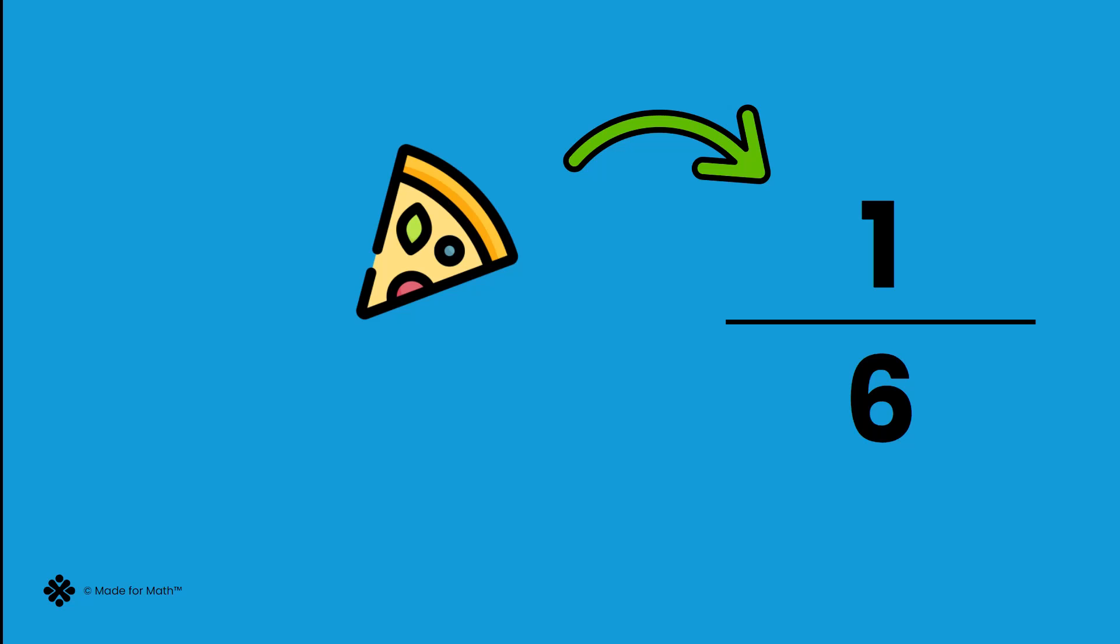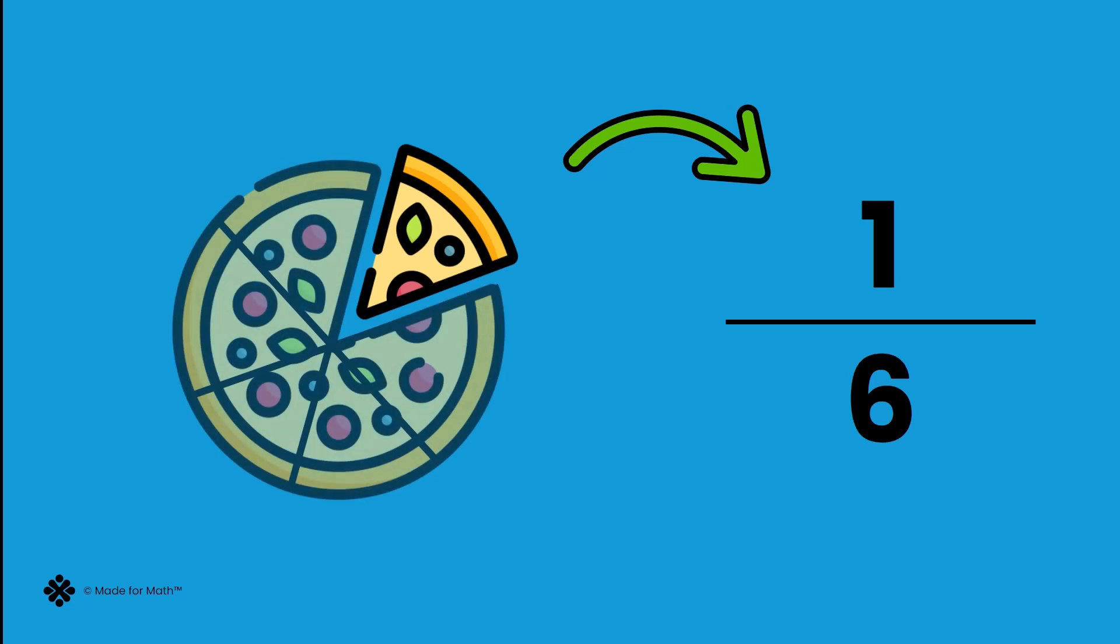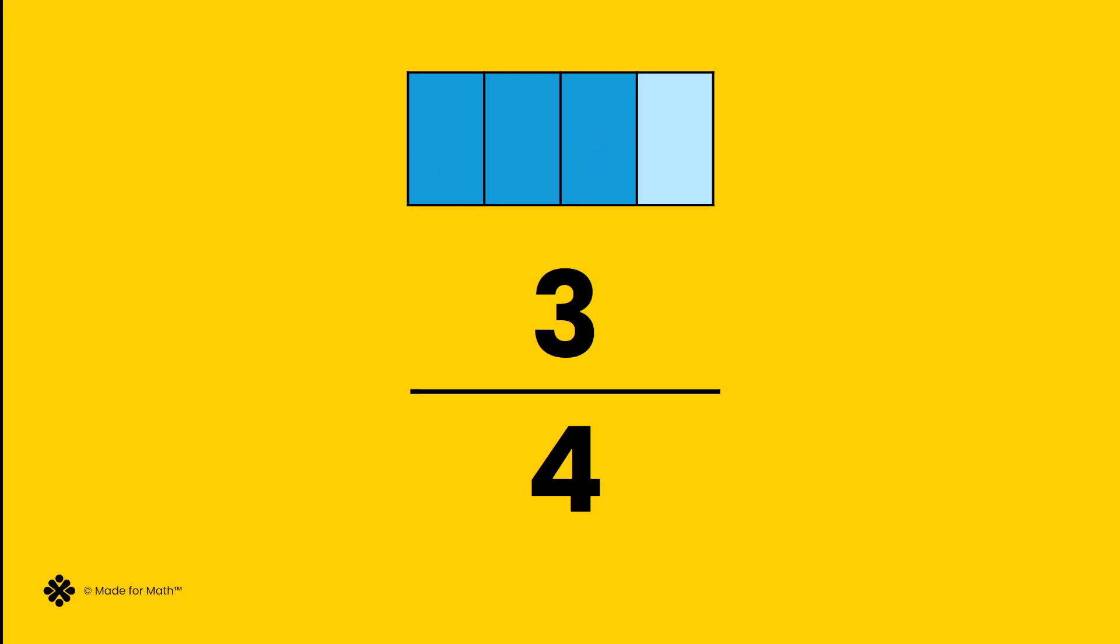It names the quantity of the fraction parts. We have one out of six equal parts. The numerator is the one. The dark blue in the bar model tells us that we have three out of four equal parts.